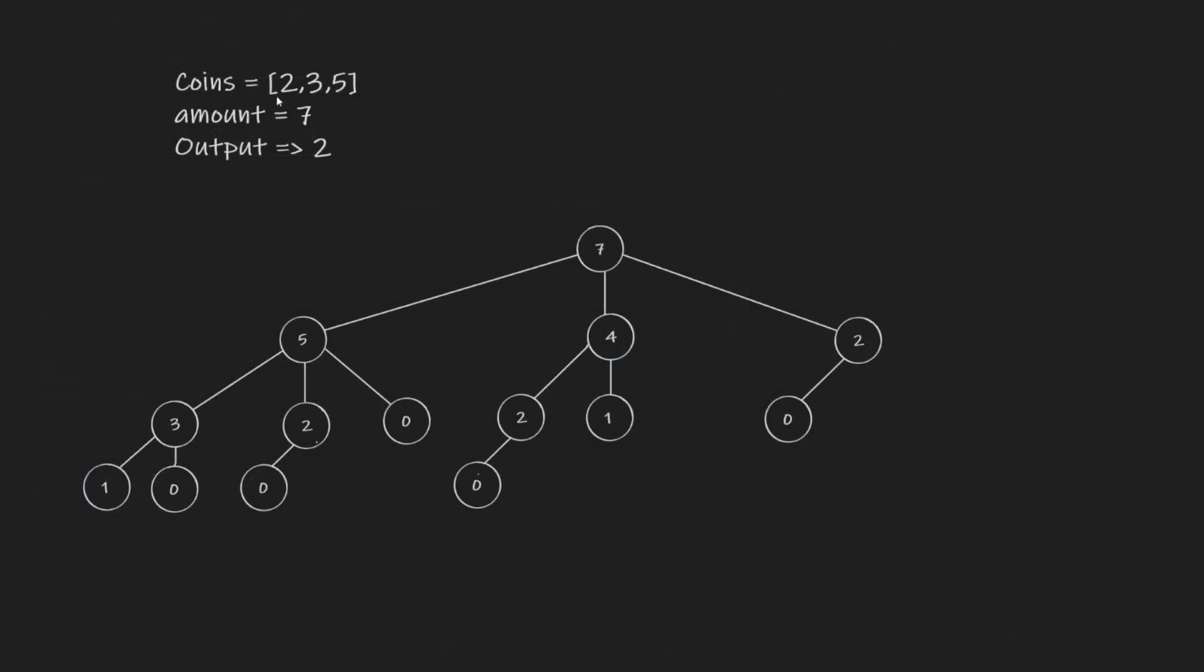To demonstrate the coin change example, we have an array of coins where you have two cents, three cents, and five cents, and we want to make change for seven cents.